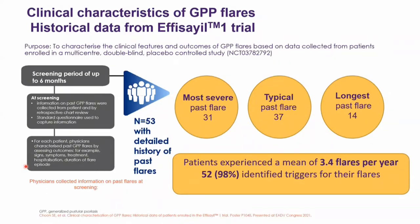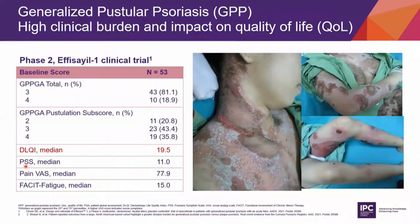The great majority of patients — 98% — could identify triggers for their flares. Most patients in the EFFISAYP-1 study had moderate to severe disease defined as a GPPGA score of 3 to 4, which was the inclusion criteria for this clinical trial. GPP flares had a huge impact on patients' quality of life, with a DLQI of 19.5.